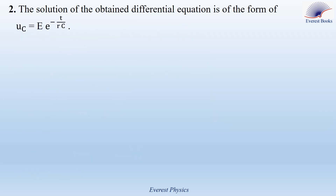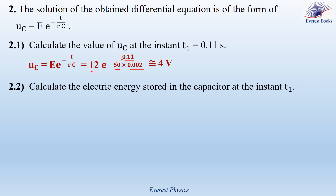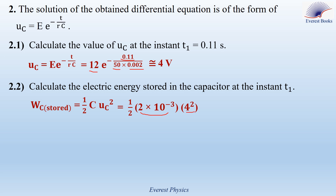Part 2: the solution of the obtained differential equation is of the form Uc equals E times e to the power minus t over RC. Part 2.1: calculate the value of Uc at the instance T1 equals 0.11 seconds. Using the expression of Uc and replacing each physical quantity by its value: E equals 12 volts, T equals 0.11 seconds, r equals 50 ohms, and C equals 0.002 farads. So at T equals 0.11 seconds, Uc is approximately equal to 4 volts. Part 2.2: calculate the electric energy stored in the capacitor at the instance T1. Using the formula: one half C times Uc squared, with C equals 2 times 10 to the power minus 3 farads and Uc equals 4 volts. Therefore, Wc stored at instance T1 equals 0.016 joules.